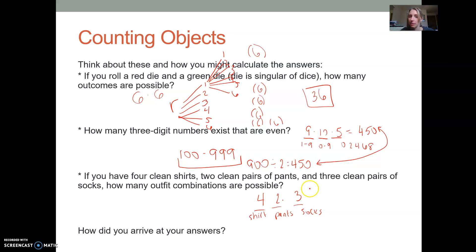And so what would we do here? Well, it's kind of the same idea. You have four possibilities. Each one of those four would have two pairs of pant options, and then each of those would have three. So really what we want to do is we want to multiply four times two times three, which is 24. So there would be 24 outfit options for this last thing.